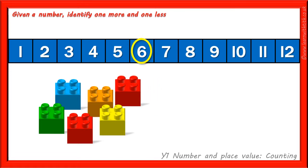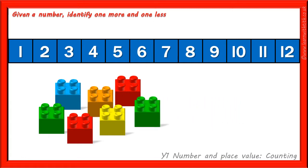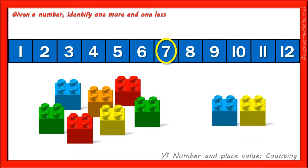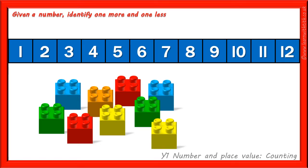1 more than 6 is 7. And we can even find out what 2 more than 7 is — that's 9. In the same way, we can find out what 1 less than any given number is, and here we are going to show our jumps backwards underneath the number track.